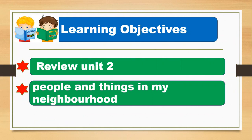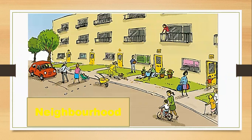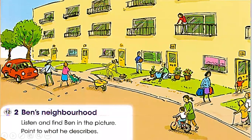Look at this big picture about a neighborhood where you can find different people, different kids, buildings, and trees. Here you can see the police officer stopping a car because the woman is crossing the road with a baby. This is the street cleaner who is cleaning the street — this job is very important.